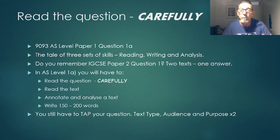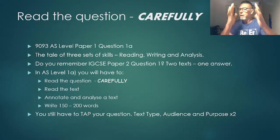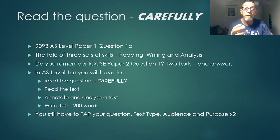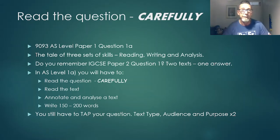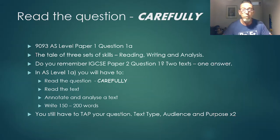There are three sets of skills we need to focus on to be effective in this question. It's the reading paper, so it's being able to read a piece of text, then there's the writing part, and then there's the analysis. For those of you who did your IGCSEs, think back to paper two question one where you were given two separate texts and had to write your own text — that was basically preparation for this. For analysis, keep in mind that writer's effect question from IGCSE paper one question 2d — the skills you learned there will definitely help you here.